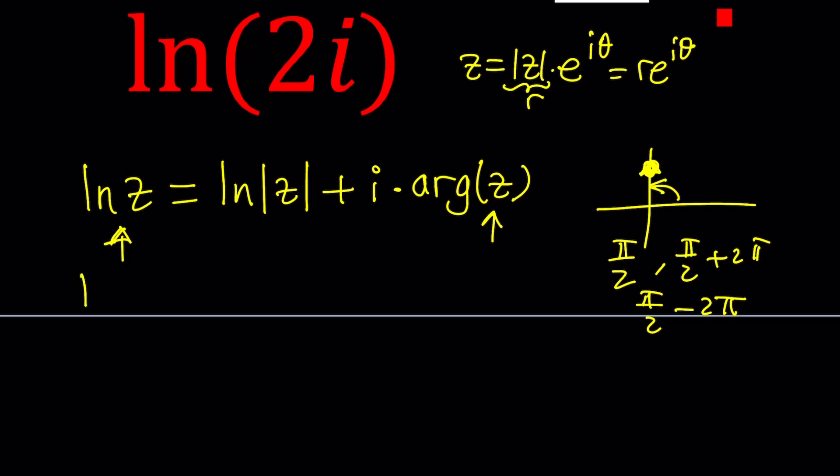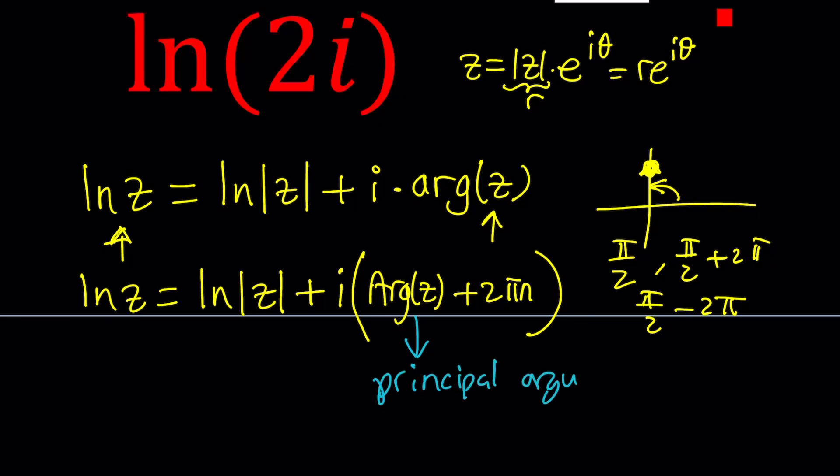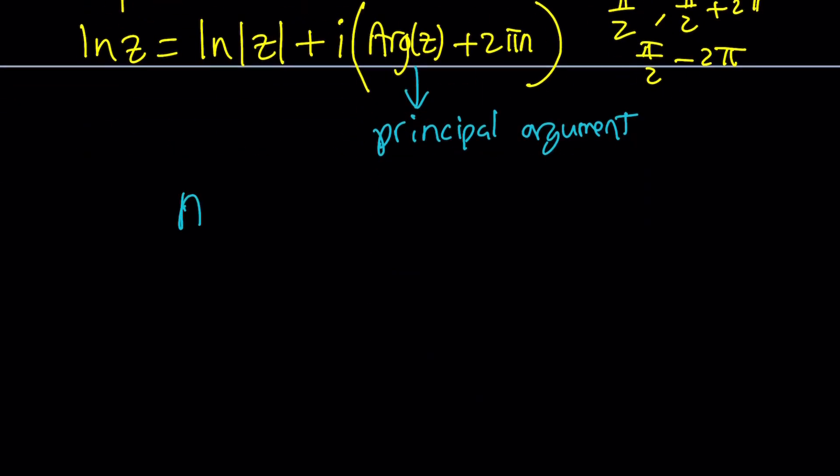So we kind of need to talk about something that is unique, which is actually the principal argument. So I can also write ln z as ln absolute value of z. This part is not going to change. That's just a real number or the real part. And the imaginary part is just going to be i times the argument of z with a capital A plus 2 pi n. 2 pi n represents adding the multiples of 2 pi. The argument of z with a capital A basically represents the principal argument.